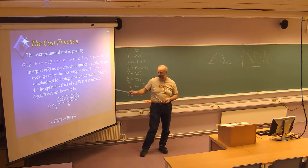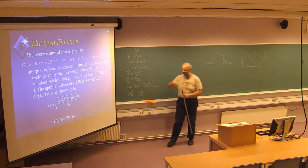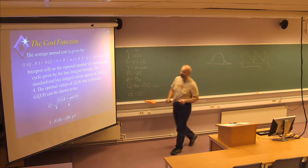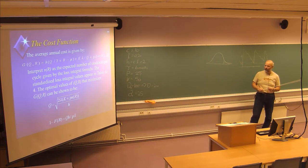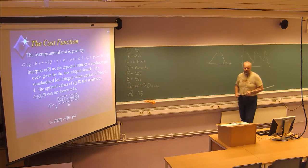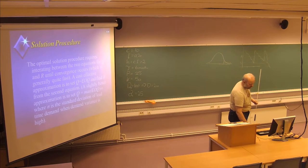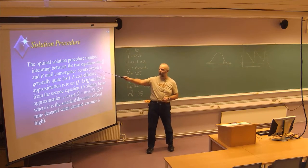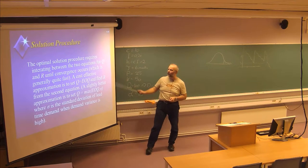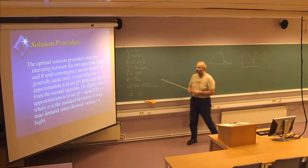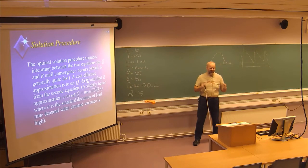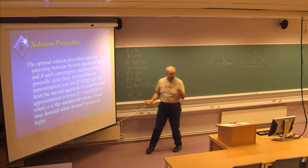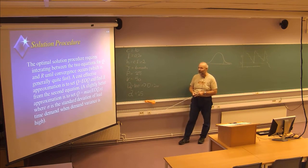When we get the same value, we know we will just keep getting the same value for the other variable too, so we don't have to continue. This usually happens within one, two, or three iterations. The solution procedure is: first find the optimal solution by iterating between the Q and R formulas until convergence. A good cost-effective approximation to start with is to use the EOQ formula for the initial Q value. When we have Q, we can easily calculate 1 minus F(R), find R, then update Q using the updated formula.